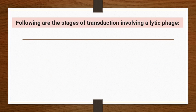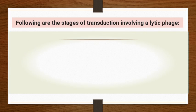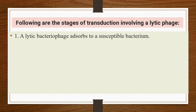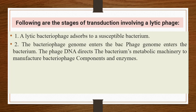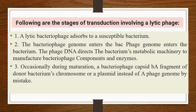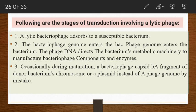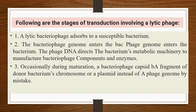The stages of transduction involving a lytic phase are: a lytic bacteriophage absorbs to a susceptible bacterium; the bacteriophage genome enters the bacterium; the phage DNA directs the bacterium's metabolic machinery to manufacture bacteriophage components and enzymes. Occasionally during maturation, a bacteriophage capsule encapsulates a fragment of the donor bacterium's chromosome or a plasmid instead of the phage genome.